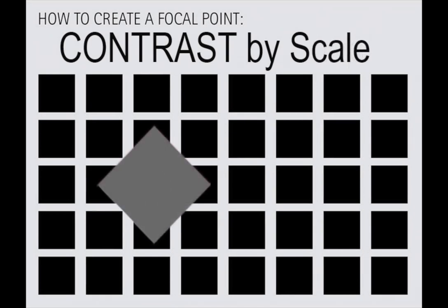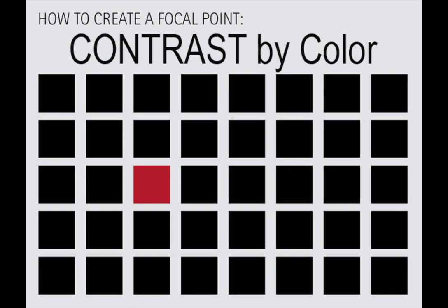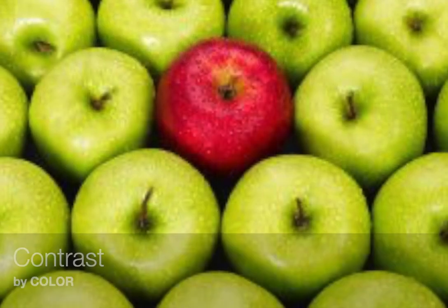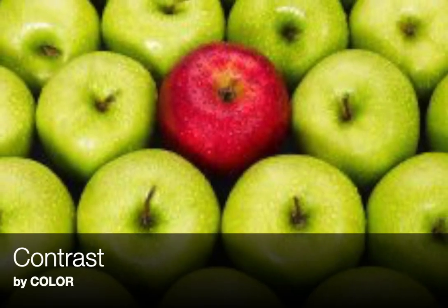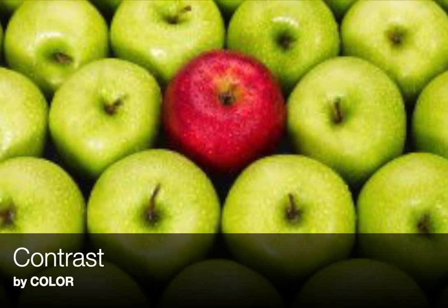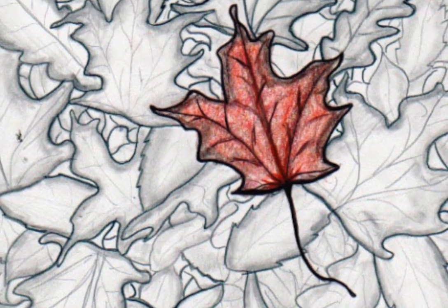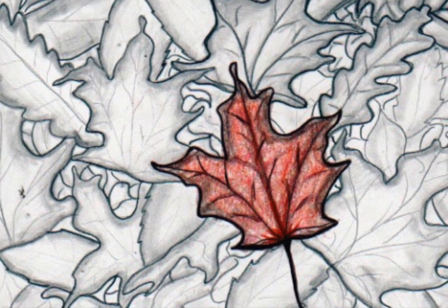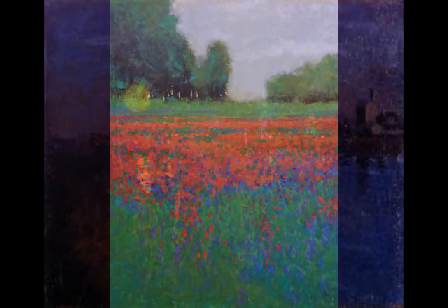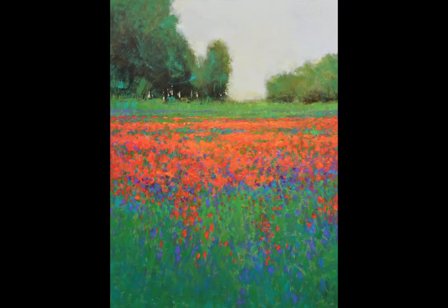First, contrast by color. Pretty obvious in the graphic example, but here's an example of a photograph — it's a very powerful way to create a focal point. Our eye is very easily and quickly directed to differences in color and especially differences in complementary colors on the color wheel.